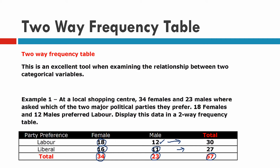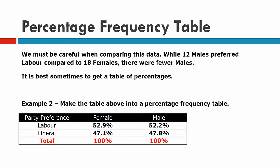When we look at it, it seems like there are more females that prefer Labour and more females that prefer Liberal, and fewer males that prefer Labour and Liberal. But that's not necessarily the case. What we actually need to do is to change it into a percentage table.